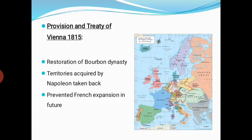Under the Treaty of Vienna, some provisions were made. First of all, the restoration of the Bourbon dynasty. During 1815 and before that, in France there was Bourbon dynasty rule. So one provision was to restore the Bourbon dynasty rule in France.